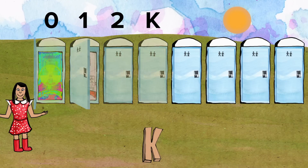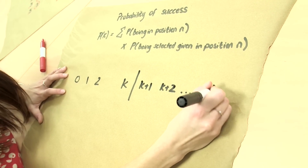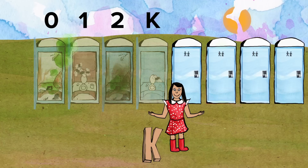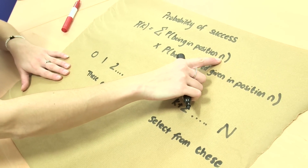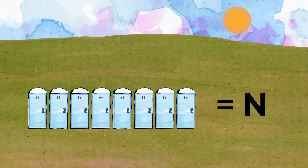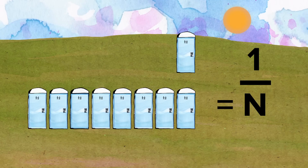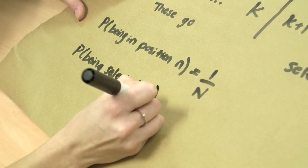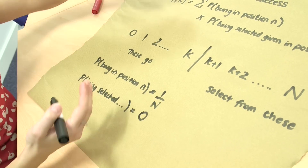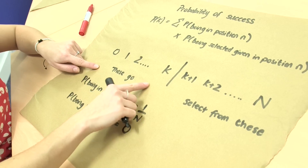All of these toilets will get rejected regardless. From then on, K plus 1, K plus 2, and so on all the way up to N — N is the total number of toilets. These are where I start comparing and decide whether to accept or reject. For all toilets from 0 to K, the probability of being in position N is 1 over N. But the probability of being selected is 0, since we reject all of these toilets. So from our probability function, we'll always be summing 1 over N times 0, giving us 0 every time.